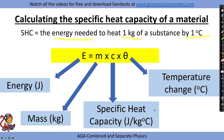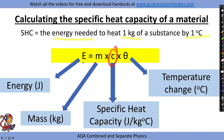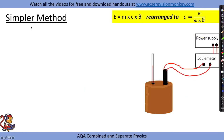In the equation E = mcθ: E is energy in joules, m is mass in kilograms, c is specific heat capacity in joules per kilogram degrees C, and theta is temperature change in degrees Celsius. You don't have to learn this equation - it's on the equation sheet. For this practical we're calculating c, so we need to work out the energy transferred, the mass, and the temperature change.